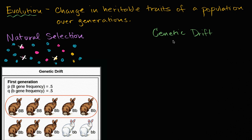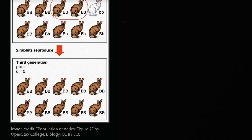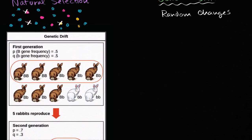Genetic drift is also a change in heritable traits of a population over generations, but it's not about the traits most fit for an environment being the ones that necessarily survive. Genetic drift is really about random changes. A good example I have here comes from OpenStax College Biology, and it shows how genetic drift could happen.